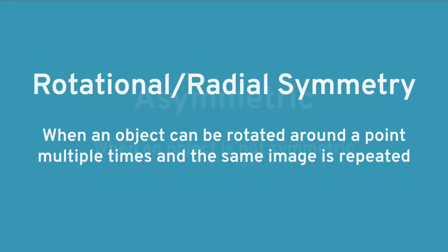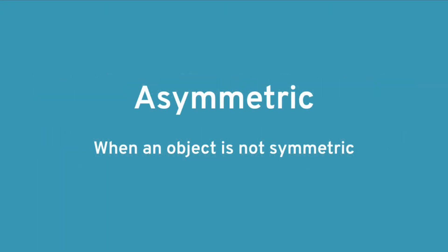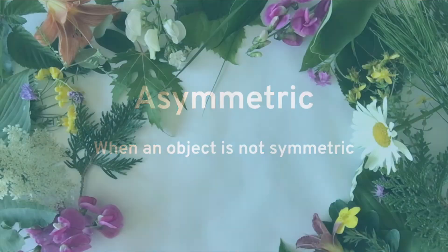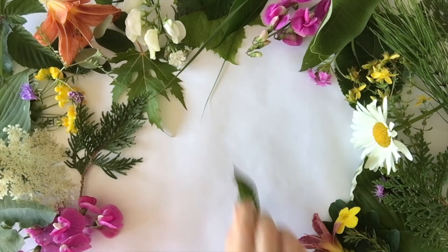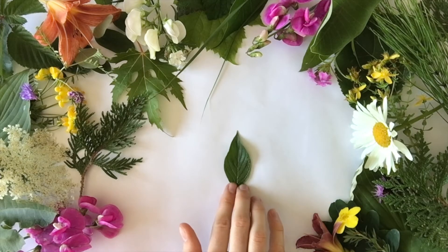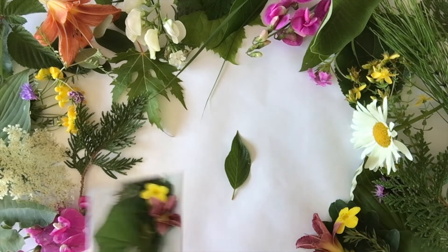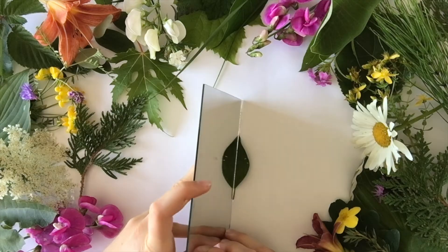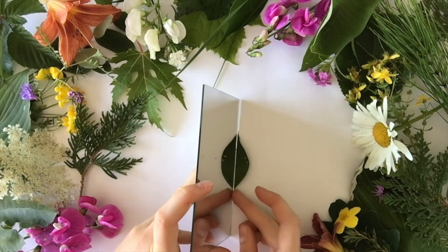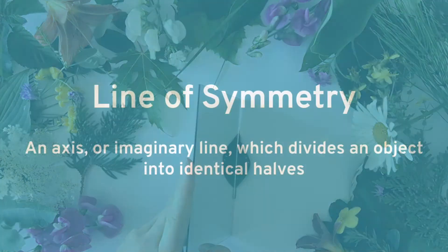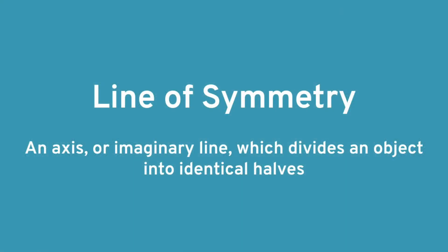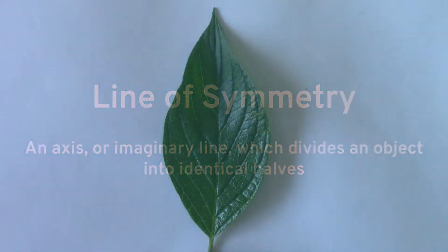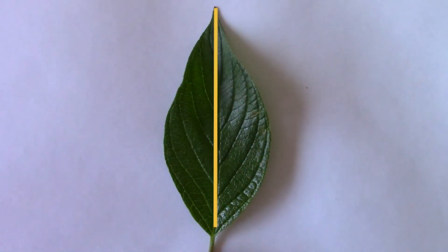An object that is not symmetric is called asymmetric. You can use a mirror to check if an object has reflective symmetry. For example, if I take this leaf and place the mirror at its centre, I can see where the line of symmetry is. The line of symmetry is an axis, or imaginary line, which we can envision to divide this leaf into identical halves.